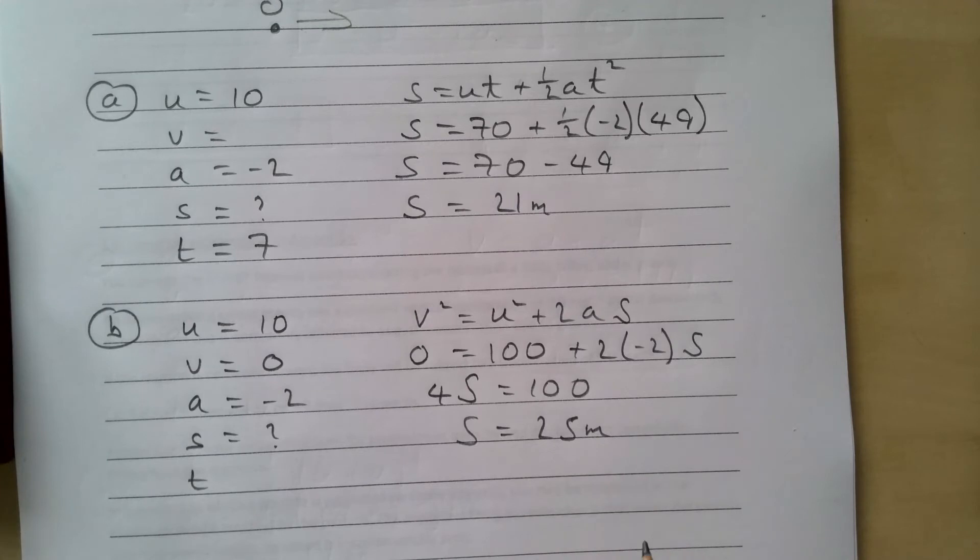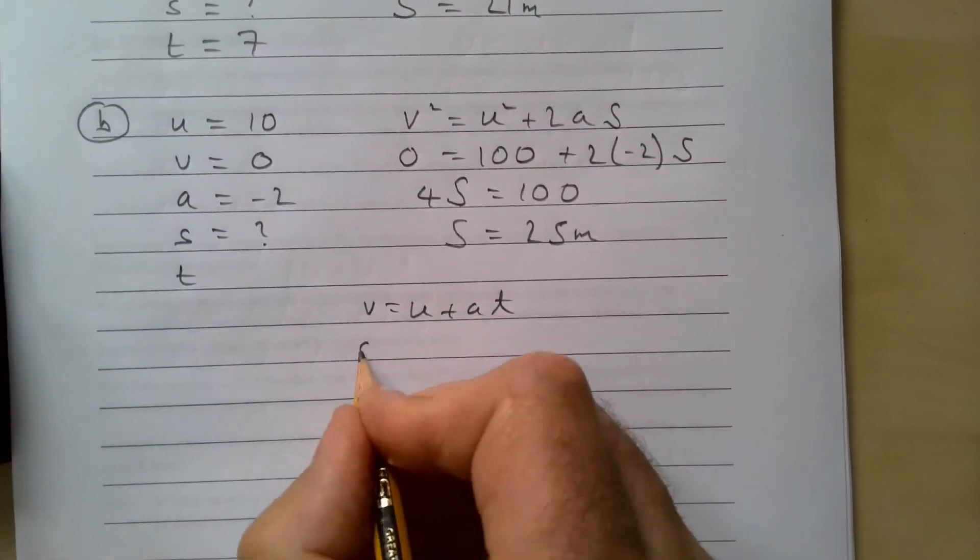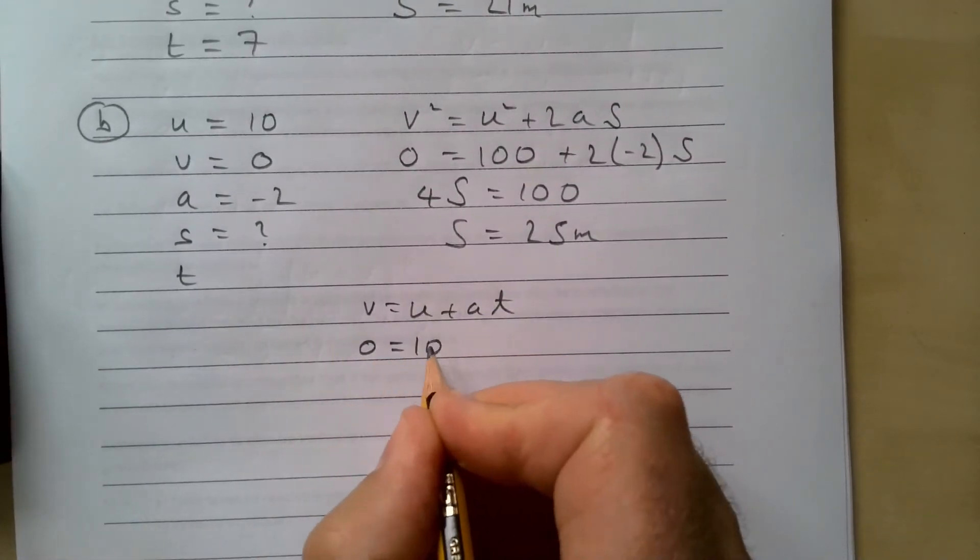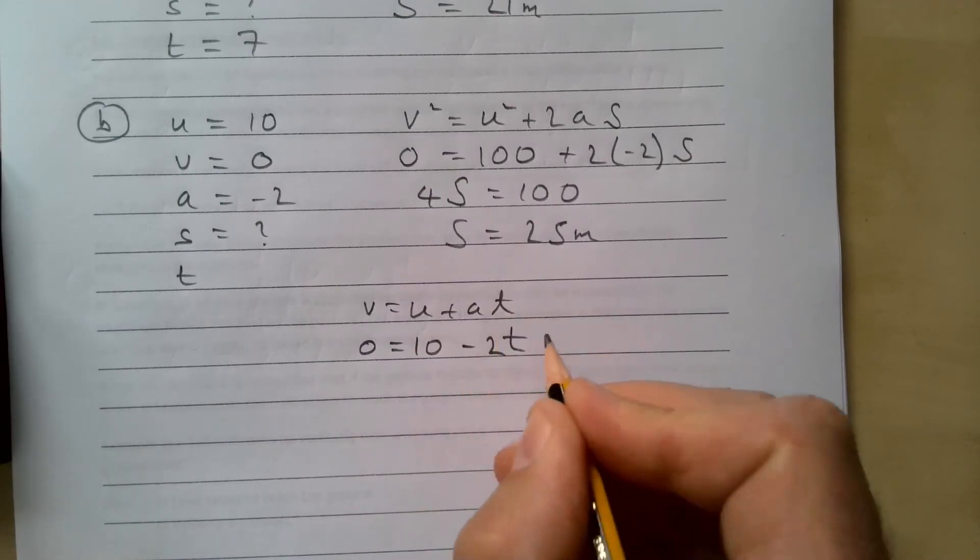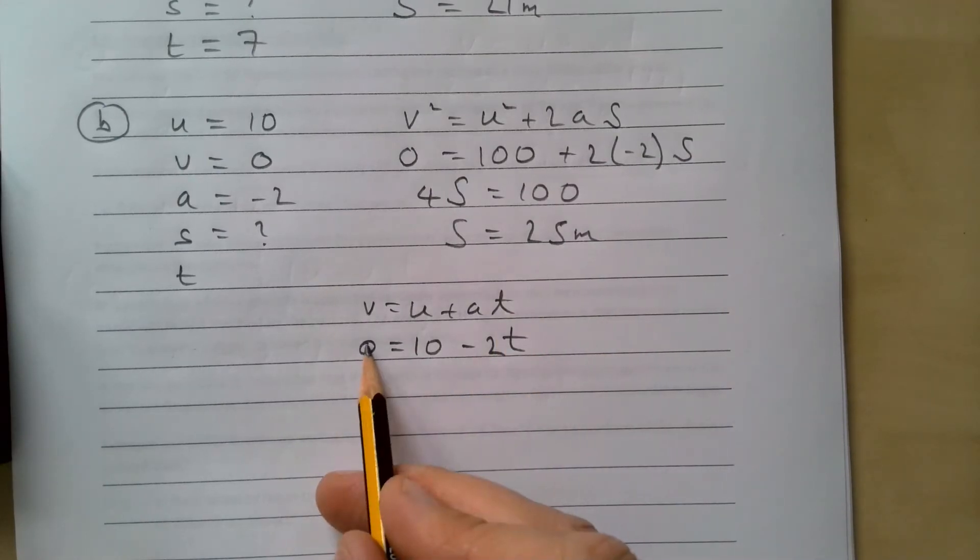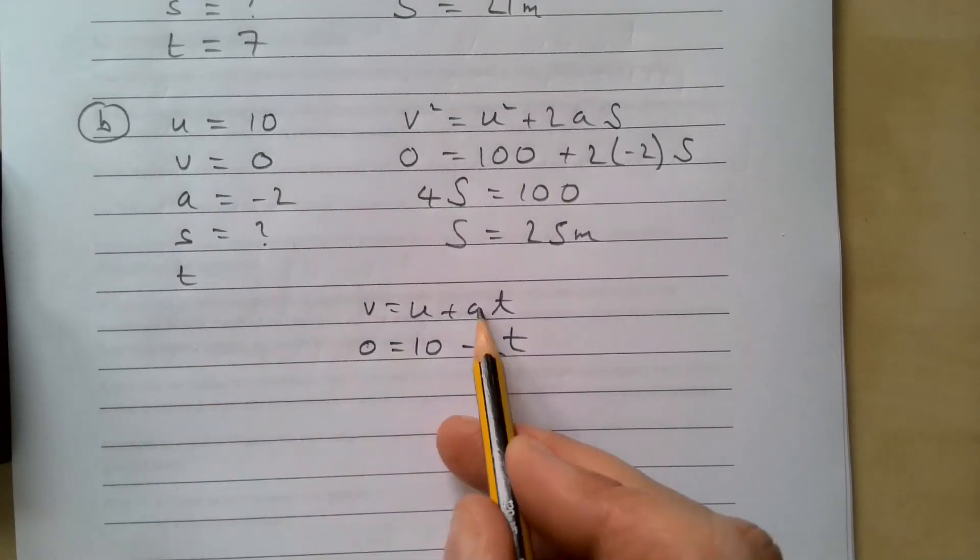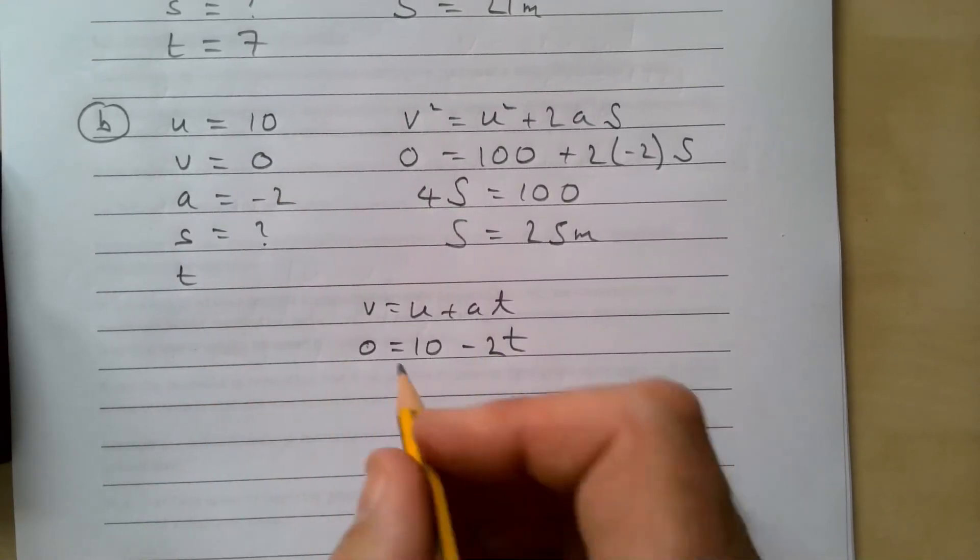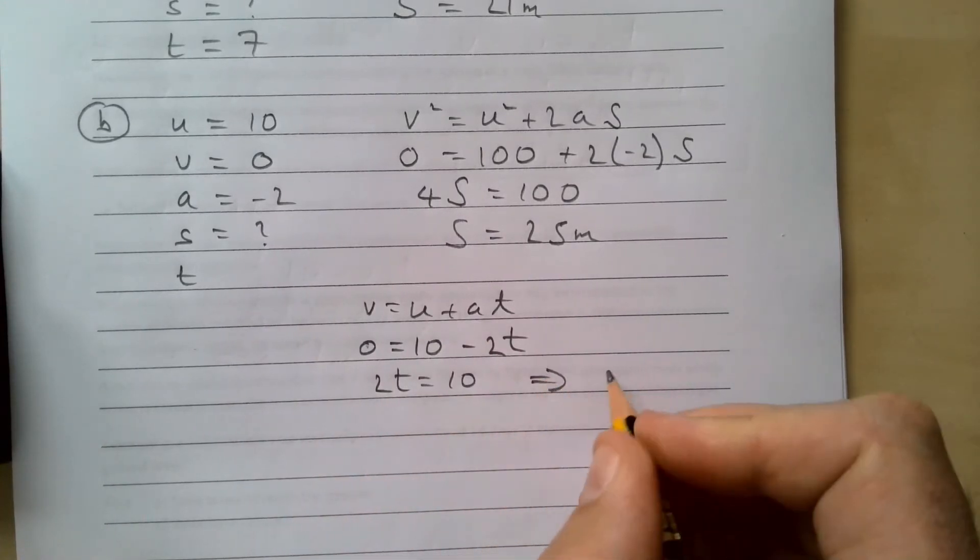We also need our value of t. So we're going to do v equals u plus at. Zero equals 10 minus 2t. Do you see what I've done there? Zero, u is 10, and a then is minus two, so it's minus 2t. That gives me 2t is 10, and that gives me my time, that is five seconds.